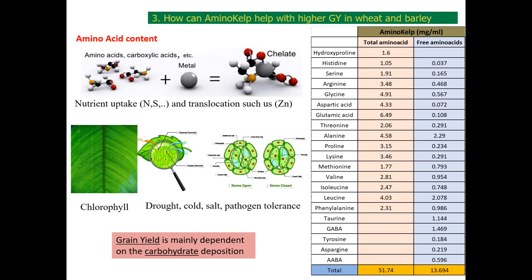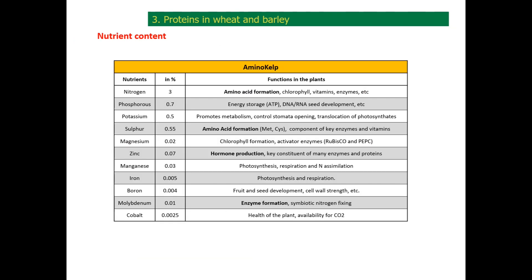The table shows the profile and concentration of amino acids in AminoKelp. This is a natural process which delivers amino acids in the plant's preferred form, while maintaining the original ratio between the different amino acids. From a nutritional point of view, AminoKelp is fortified with macro and micronutrients that will also help plants to form proteins, increase photosynthesis, and decrease recovery time after stress conditions. In my next presentation, I will detail the importance of each of these nutrients for plant performance and yield.